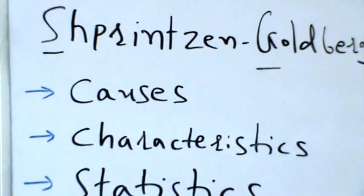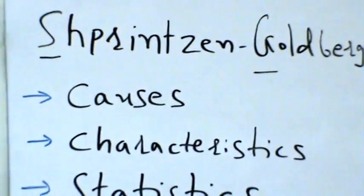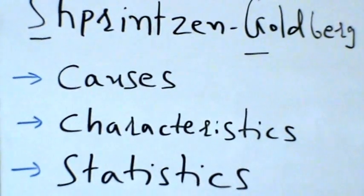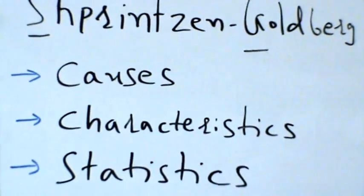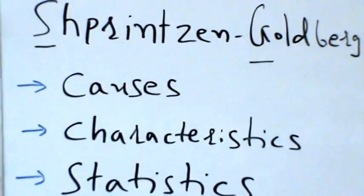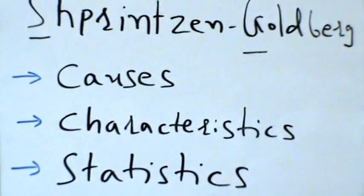These processes include proliferation (cell growth and division), differentiation (the process by which cells mature to carry out special functions), mobility (cell movement), and apoptosis (the self-destruction of cells).